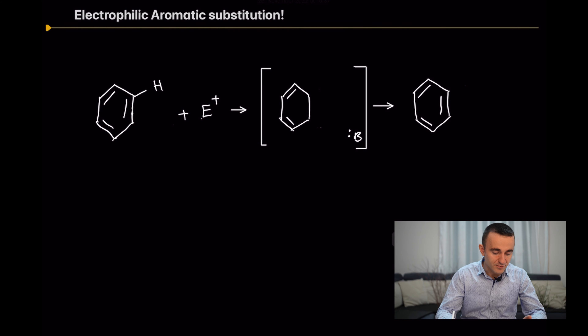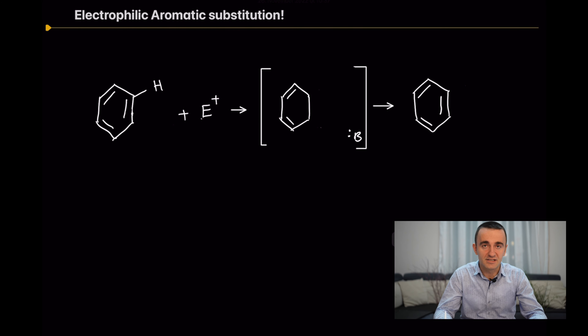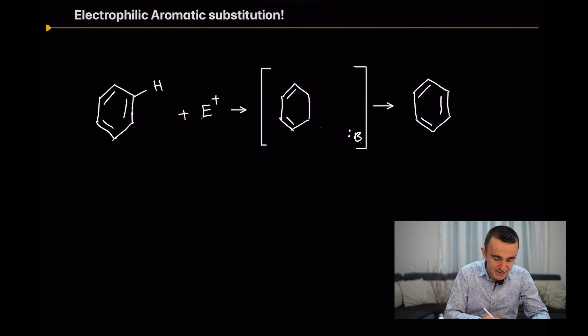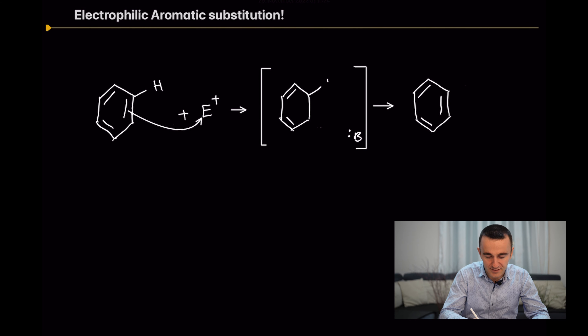Hey, welcome back to my channel. In this video you are going to learn the most common reactions of aromatic compounds — electrophilic aromatic substitution. The most typical ones are halogenation, nitration, sulfonation, alkylation, and acylation, also called Friedel-Crafts reactions. Without any further ado, let's dive into it.